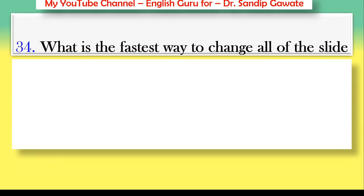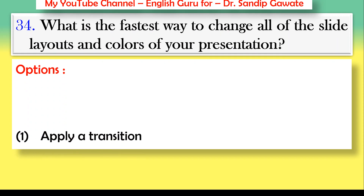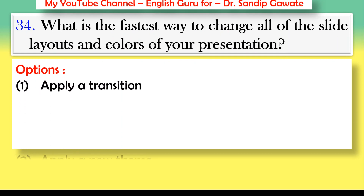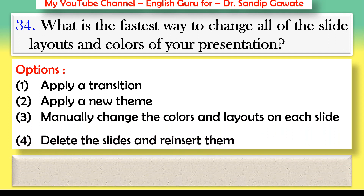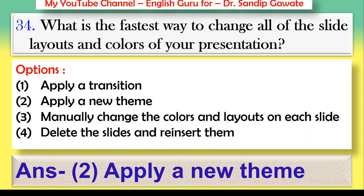Question 34: What is the fastest way to change all of the slide layouts and colors of your presentation? Options: apply a transition, apply a new theme, manually change colors and layouts on each slide, or delete and reinsert the slides. The correct answer is option number two — apply a theme.